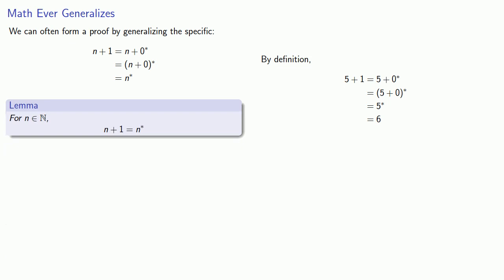Now an important idea in mathematics is math ever generalizes. And we can often form a proof by generalizing the specific. So, in this specific case, we found that 5 plus 1 was the successor of 5, or 6. And if instead of using 5, we use n, we can go through the same steps. And that gives us a useful little result. For any natural number, n plus 1 is the successor of n.